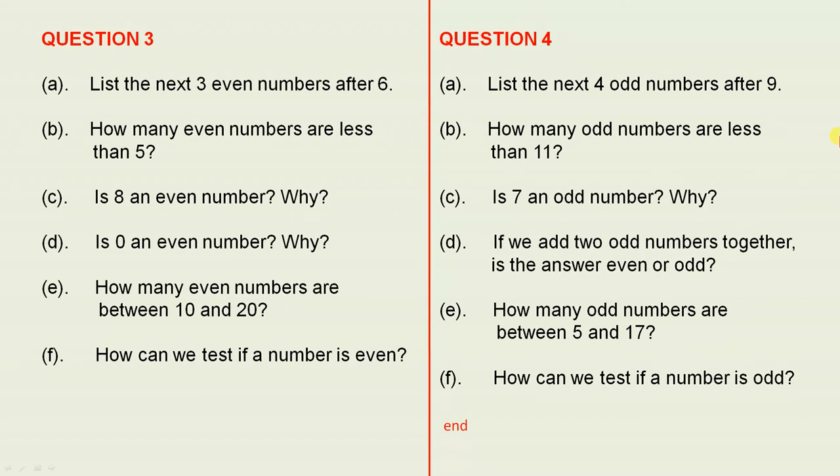Question four: list the next four odd numbers after nine. How many odd numbers are less than eleven? Is seven an odd number? Why? If we add two odd numbers together, is the answer even or odd? How many odd numbers are between five and seventeen? How can we test if a number is odd? That's another little tricky one there for you. Now for this question here, I just want to clarify that we're only looking at the positive numbers here, not the negative numbers.